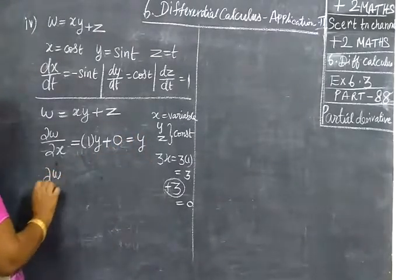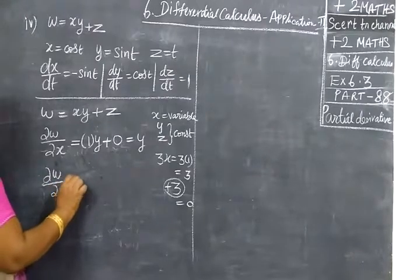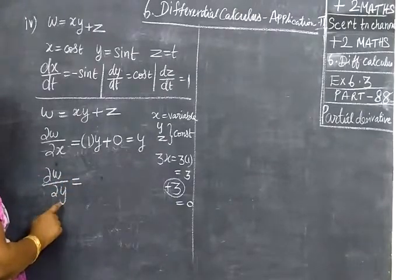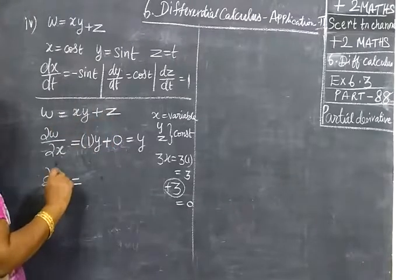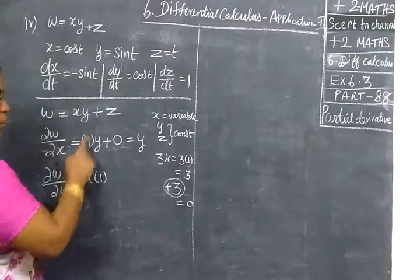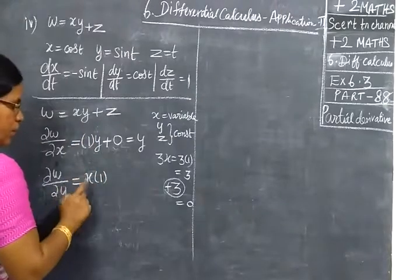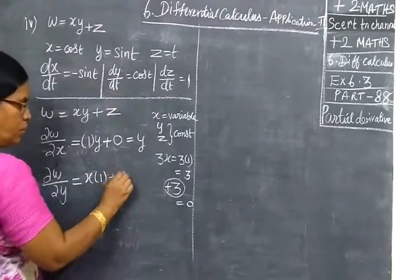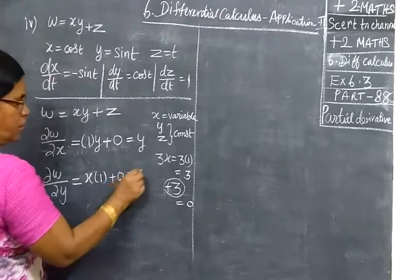Now, ∂w by ∂y. Now y is variable, other two are constant. So y is 1. y variable, y is 1. x constant is 0. Answer is x.